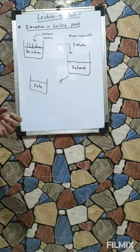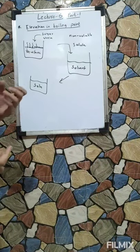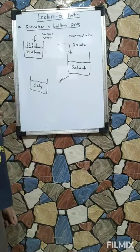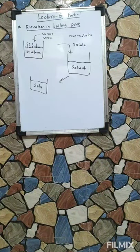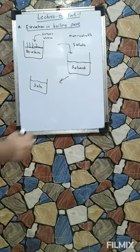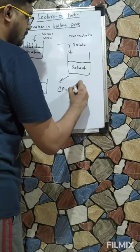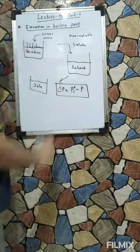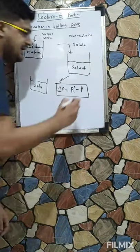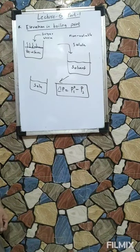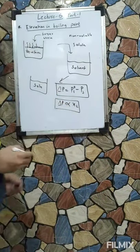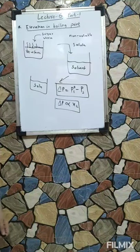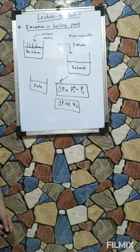We will experience a drop in vapour pressure. This drop in vapour pressure is called lowering in vapour pressure. Delta P equals P1° minus Ps, where P1° is vapour pressure of pure solvent and Ps is vapour pressure of solution. We proved that delta P is directly proportional to x2, the mole fraction of solute.